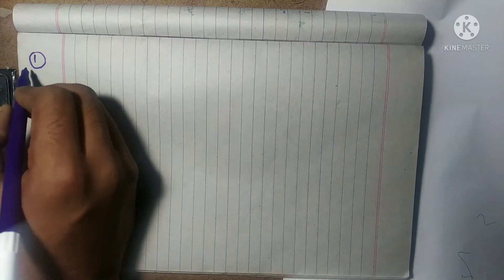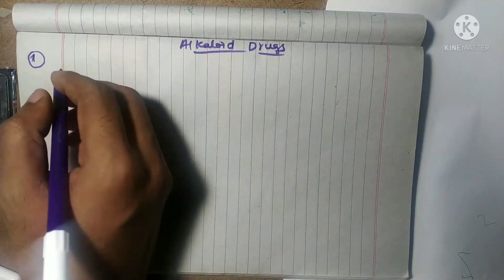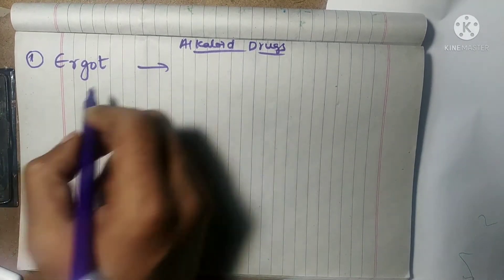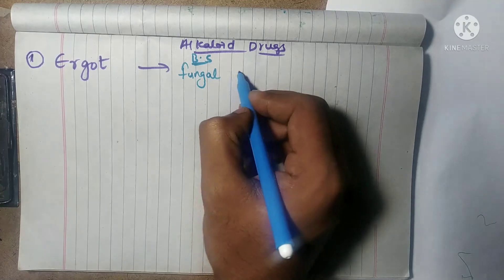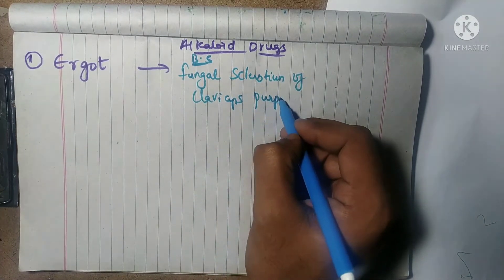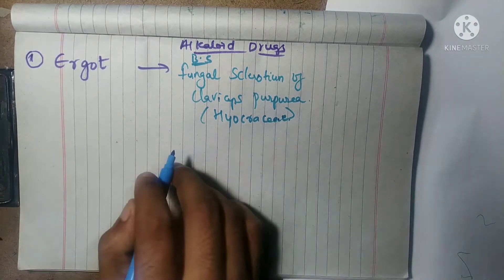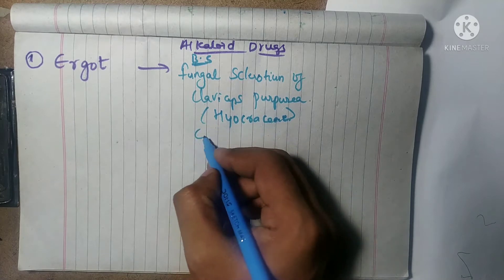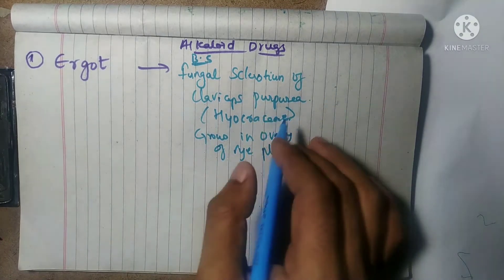Hey guys, welcome back to my channel. Here I am going to explain you about the biological source of the alkaloid drugs. So here first one includes ergot. Ergot is obtained from the fungal sclerotium of Claviceps purpurea. Its family includes Hypocreaceae and it grows in the ovary of the rye plant.